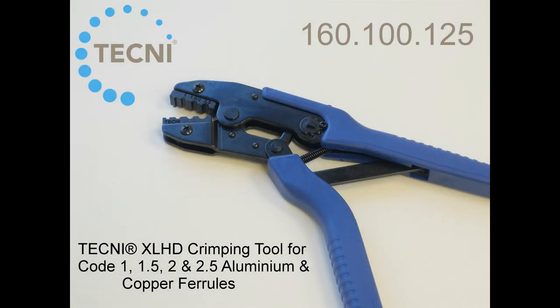In this video we demonstrate the use of the Techni XL HD crimping tool which is suitable for use on code 1, 1.5, 2 and 2.5 aluminium and copper ferrules.